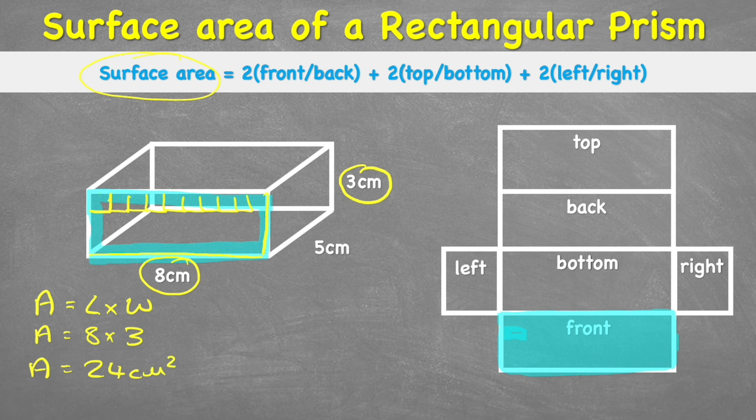So we've just calculated that the front is 24 centimeters, but we already learned that the back is therefore exactly the same. So to get to the measurement of the back we can simply just multiply this by two, which leaves us with 48 centimeters squared for our front and back.